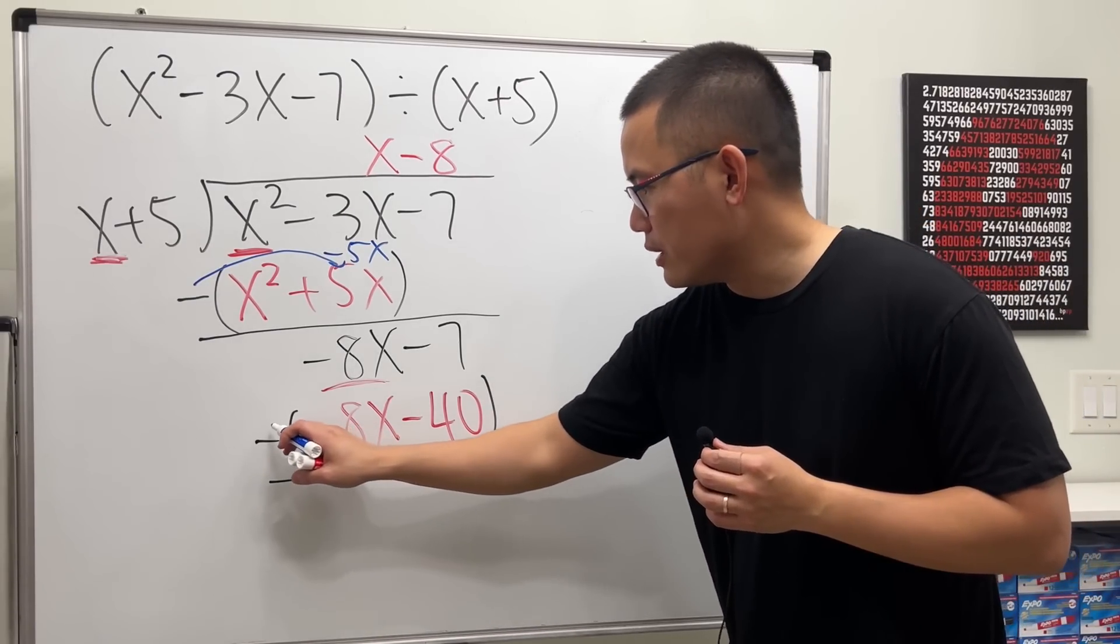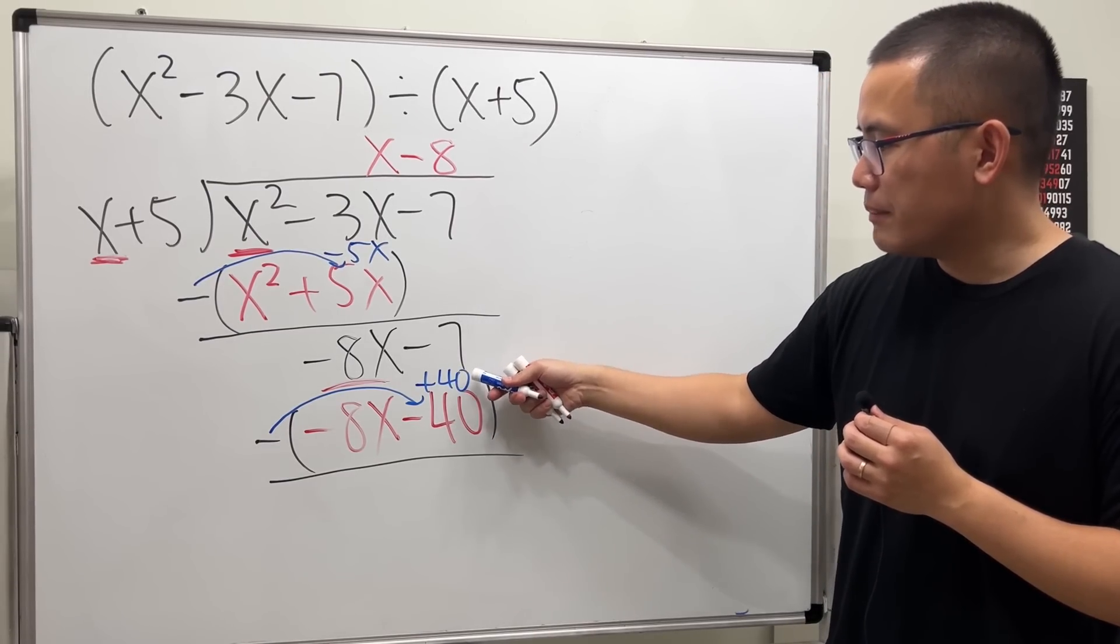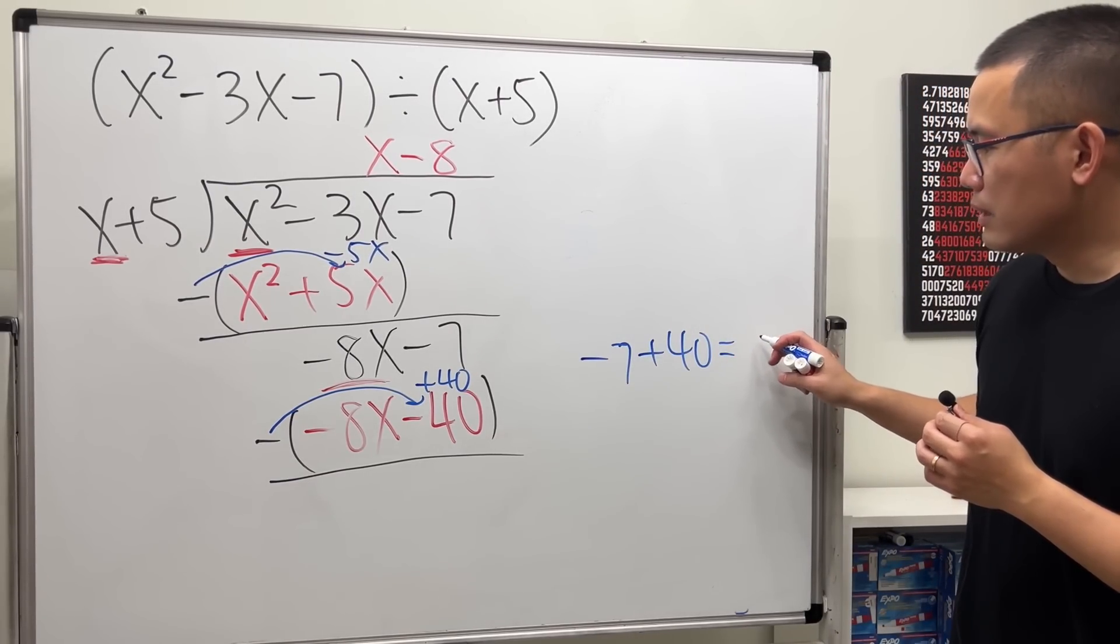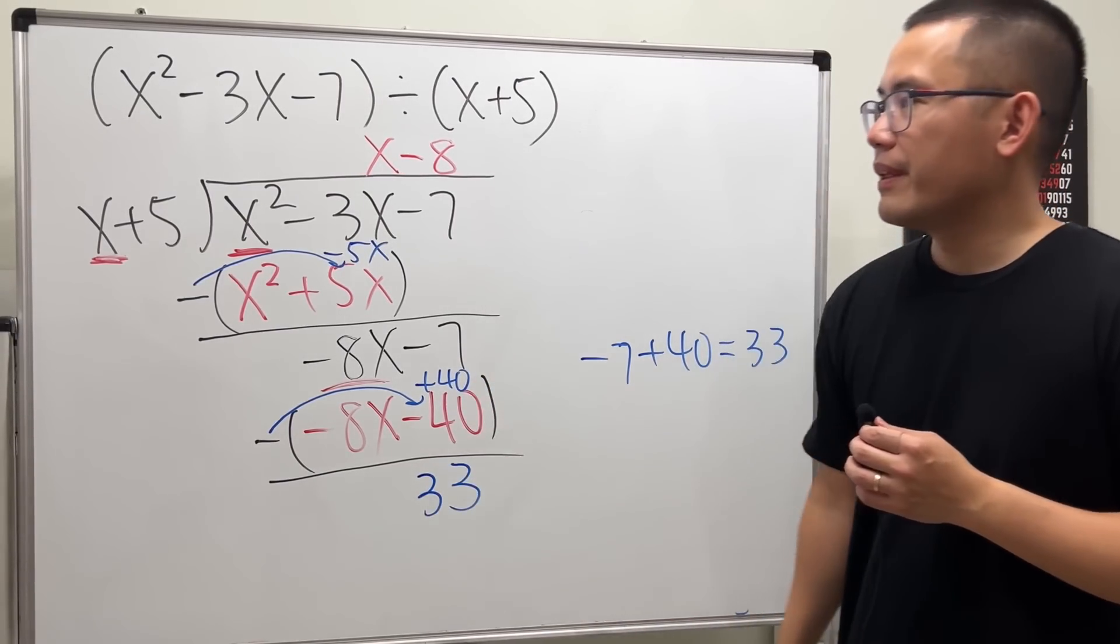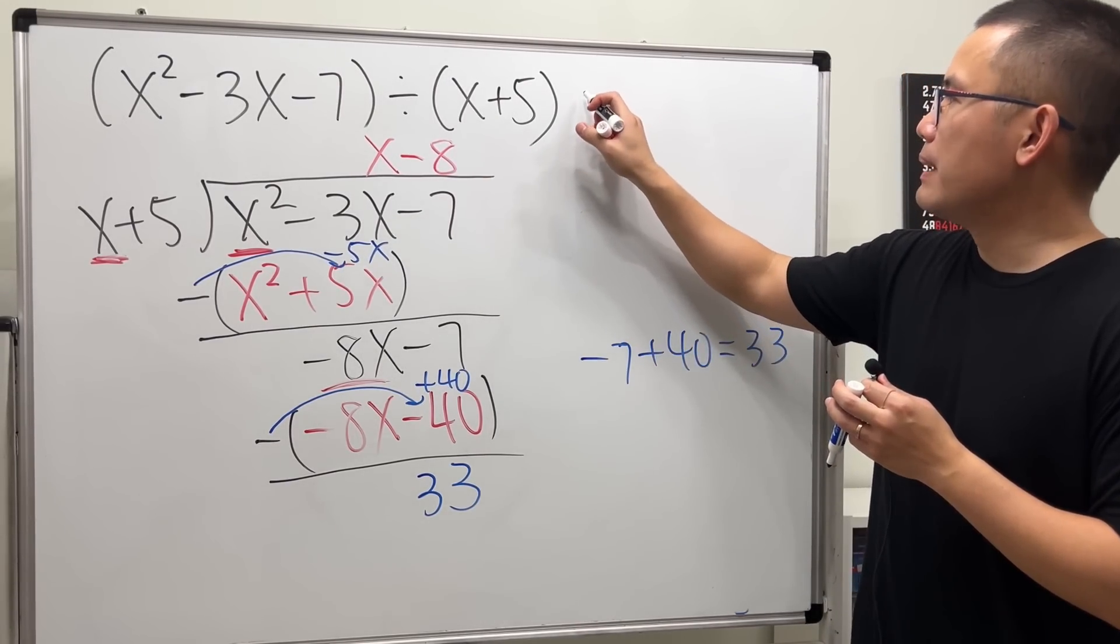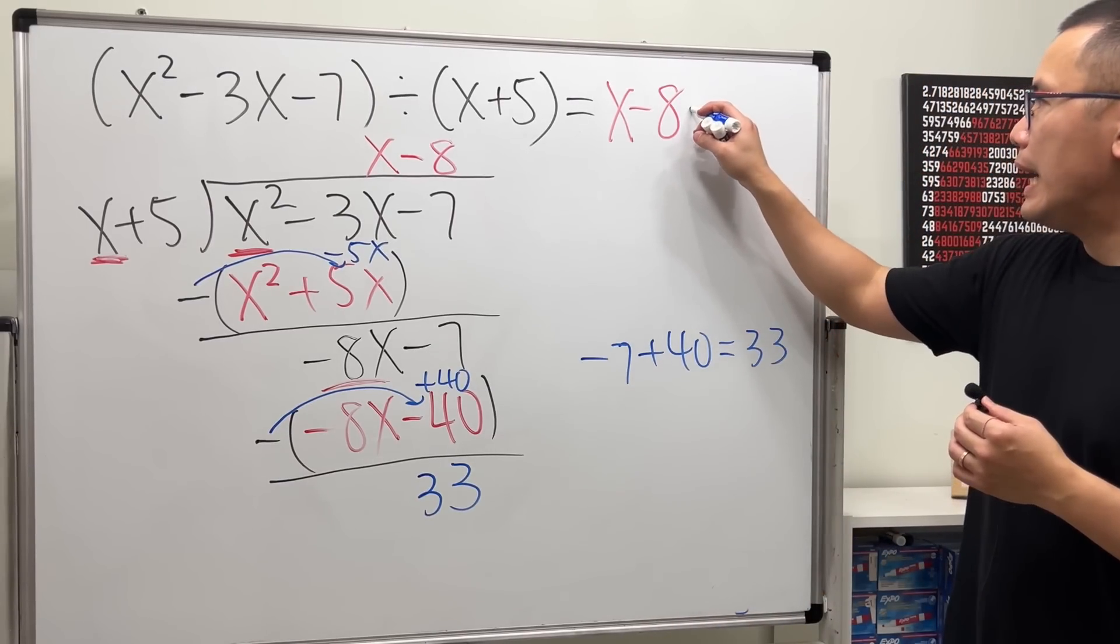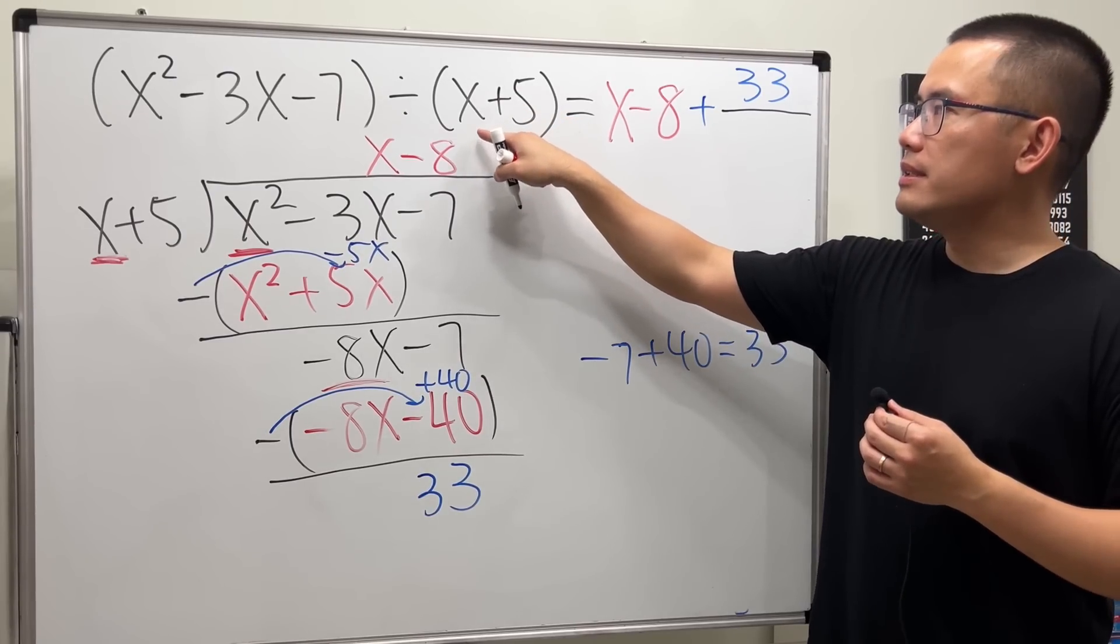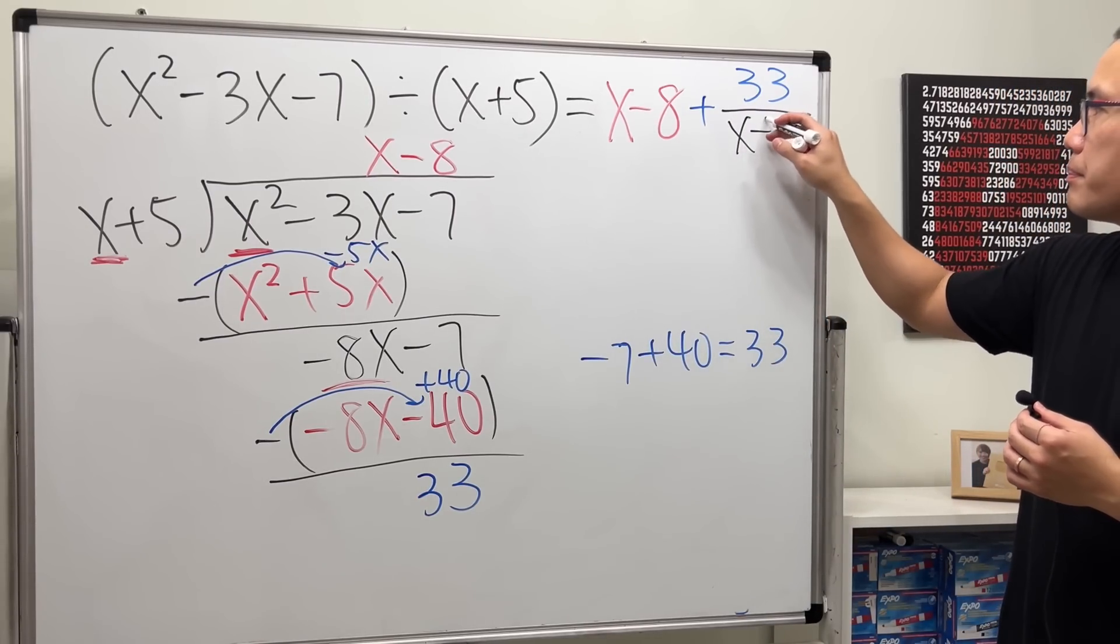And for this one, just do it carefully. Distribute the negative. Negative times negative becomes a positive. So we have to do negative 7 plus 40. Negative 7 plus 40 gives us a positive 33. It's like 40 minus 7. So the remainder here is positive 33. So this is how we're going to write the answer now. We have the quotient, which is x minus 8. And then the remainder here is positive 33. So we're going to add 33 over this, because this is divided by that. So this is like the denominator. The denominator stays the same right here, which is x plus 5. So this is the format that you can present if you have a remainder besides 0.